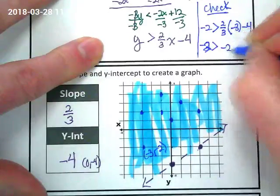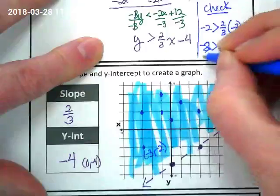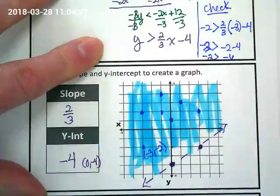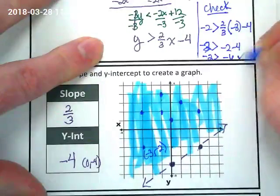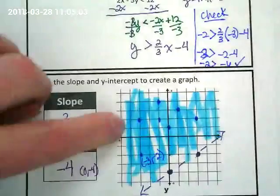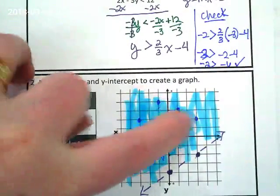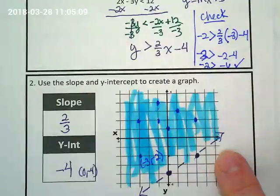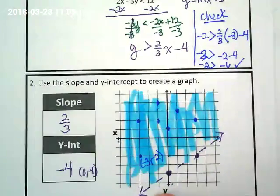Negative 2 is greater than? What's 2 times negative 3 divided by 3? Negative 2. Negative 2 minus 4. Is negative 2 greater than negative 6? Yes. Of course. So that checks. Oh. And I guarantee you, any of the points that are up here would work, but nothing on this line would work. Or below it. Because it's greater than and not greater than or equal to.